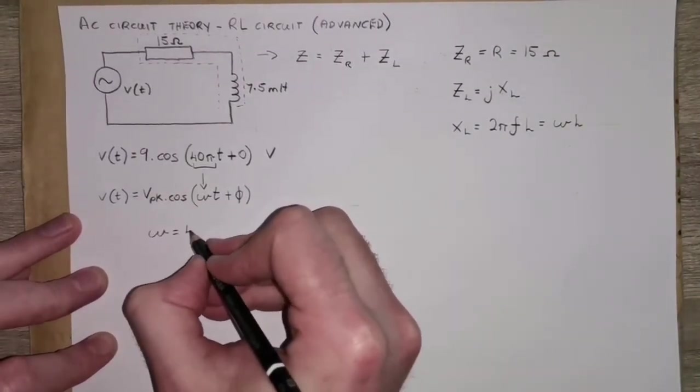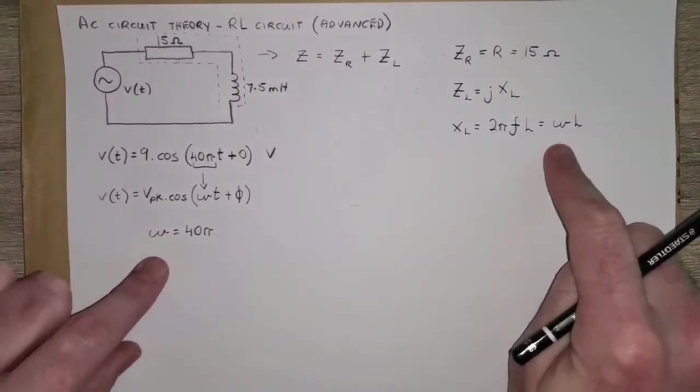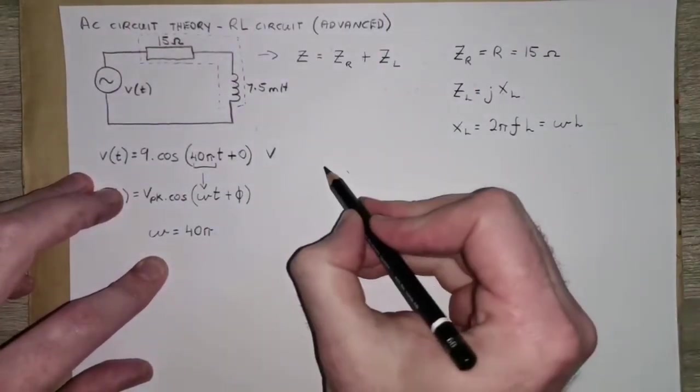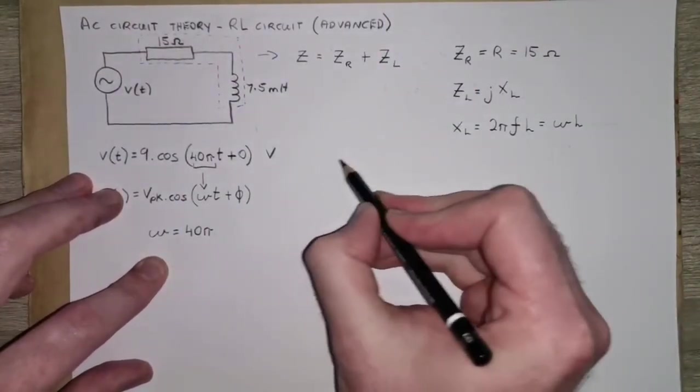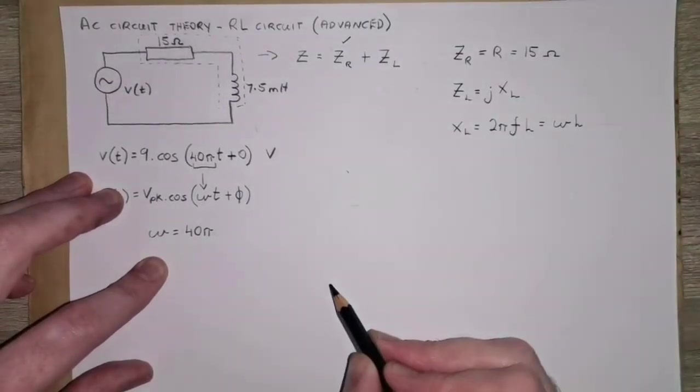Let's write that down for ourselves. And now we have all the same information as before, and we can approach this question. So we have impedance of the resistor, no problem.